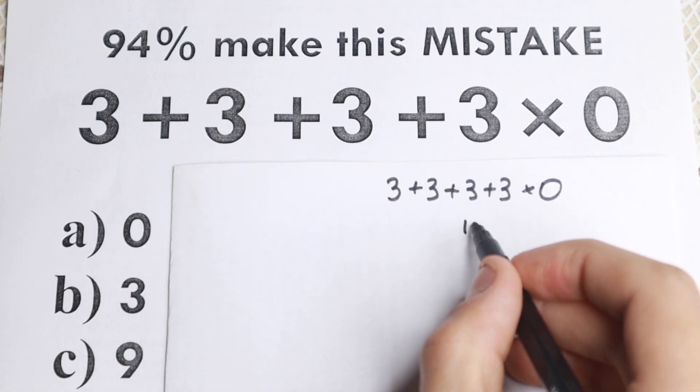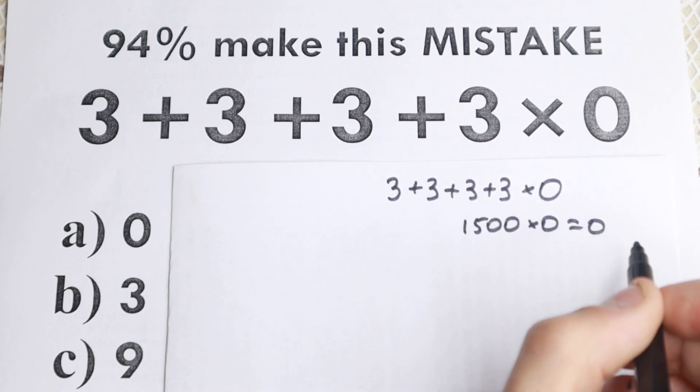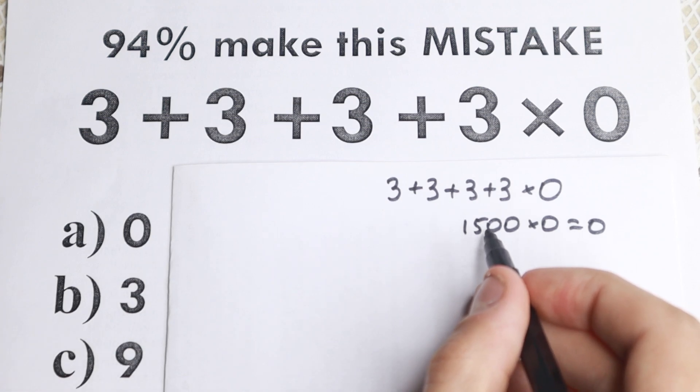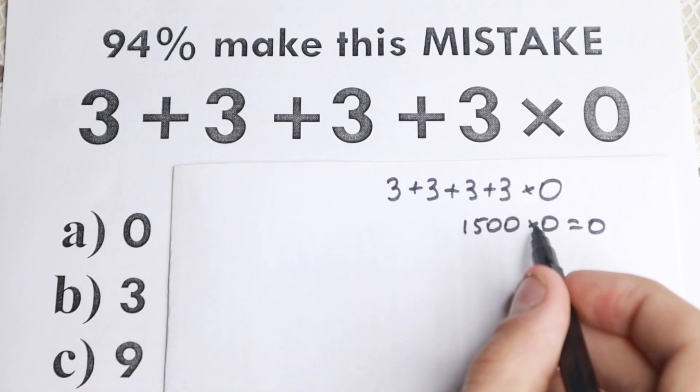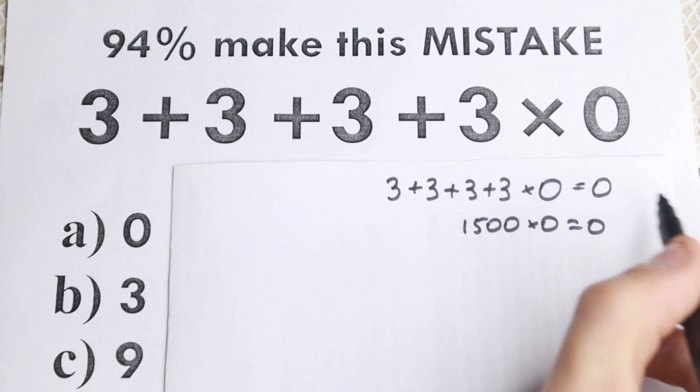for example, if we have like 1500, if you multiply it by 0, we will have 0. And doesn't matter about this number. They say this is equal to 0,